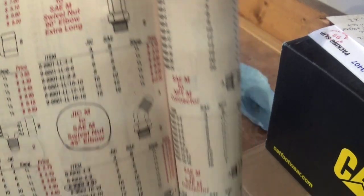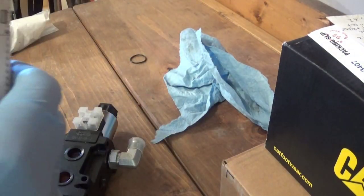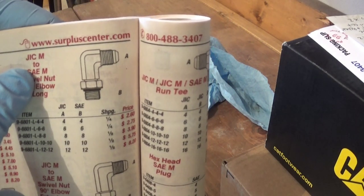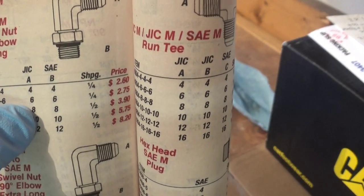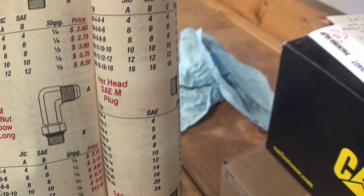Alright, it's literally been 30 seconds. I pulled my surplus center catalog out of the drawer and we found exactly what we need. Right here. GIC size 8, DUSAE size 8, it'll be $3.90 a piece, I need three of those.